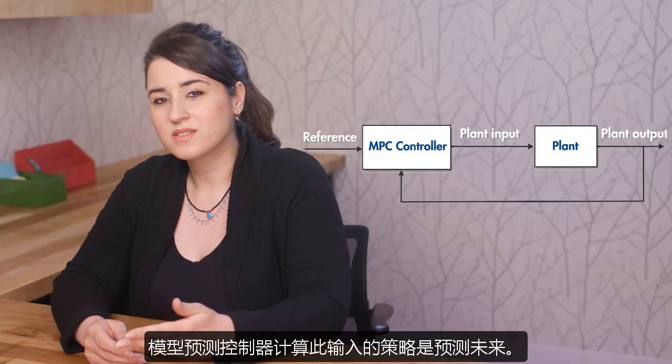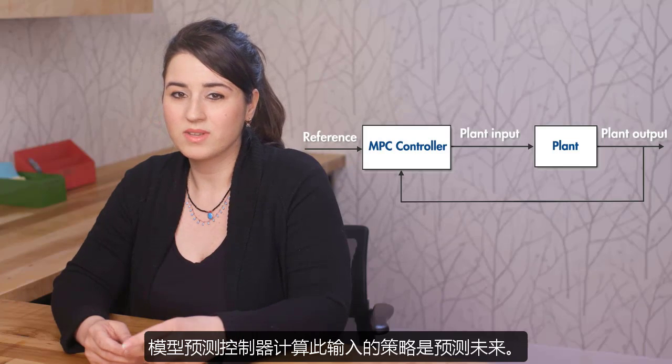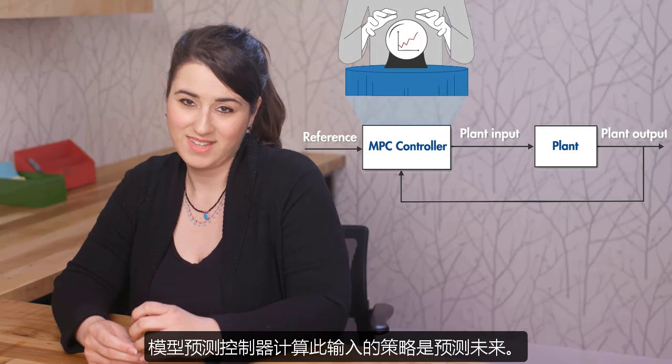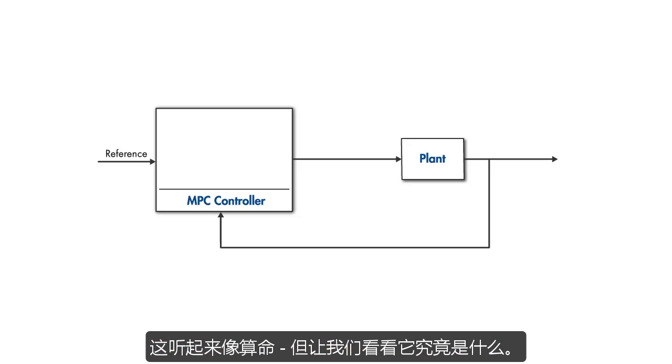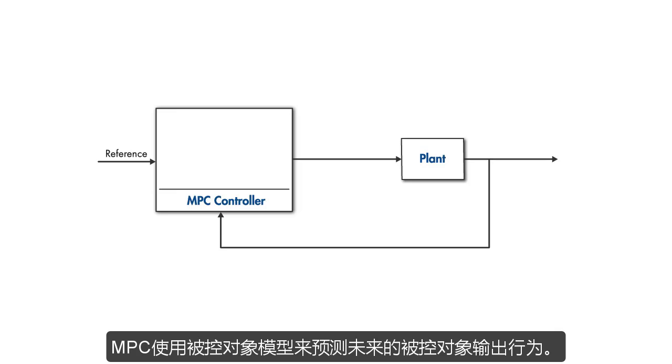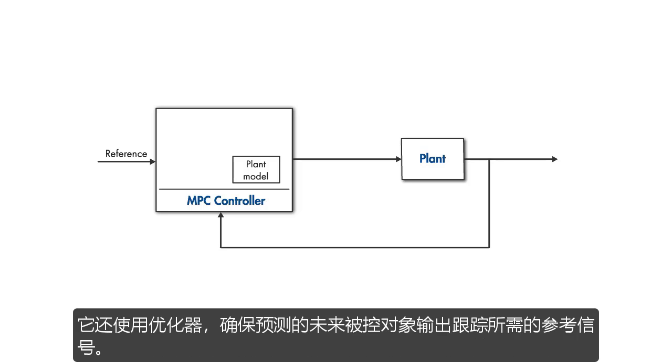A model predictive controller's strategy to compute this input is to predict the future. It sounds like fortune-telling, but let's see what it really is. MPC uses a model of the plant to make predictions about the future plant output behavior. It also uses an optimizer, which ensures that the predicted future plant output tracks the desired reference.